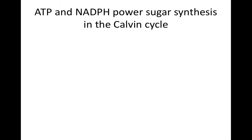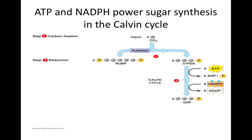ATP and NADPH power sugar synthesis in the Calvin cycle. Inputs to this food-making process are carbon dioxide from the air and ATP and NADPH, both generated by the light reactions. Using carbon from CO2, energy from ATP, and high-energy electrons from NADPH, the Calvin cycle constructs an energy-rich 3-carbon sugar G3P. A plant cell can use G3P to make glucose and other organic molecules as needed. The starting material is a 5-carbon sugar named ribulose bisphosphate (RuBP). In the carbon fixation step, the enzyme rubisco attaches carbon dioxide to RuBP. In the next stage — a reduction step — NADPH reduces the organic acid 3-PGA to G3P with the assistance of ATP.